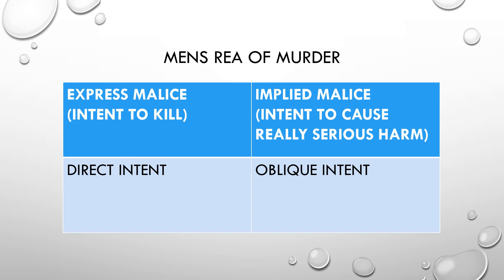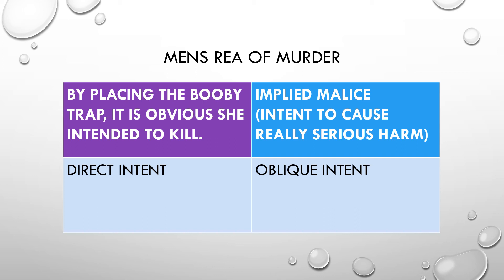The mens rea of murder is express malice or implied malice, with either direct or oblique intent. Going back to the scenario: Regina decided to place a booby trap to kill David. For express malice — intent to kill — I would argue that by placing the booby trap it was obviously intended to kill. This requires knowledge of how the booby trap would work; if it is dangerous enough to kill, she intended to kill.